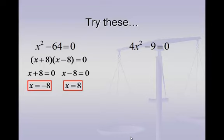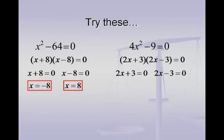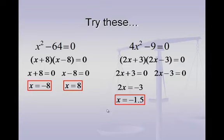The second problem on this slide still uses the perfect square method. 4x squared breaks apart into 2x and 2x. Negative 9 breaks apart into positive 3 and negative 3. So my factors are 2x plus 3 and 2x minus 3. Now we set them equal to zero and solve for x. On the first factor, I would begin by subtracting 3 to the right, and then divide by 2. Negative 3 divided by 2 is negative 1.5, or you can leave it as the fraction negative 3 over 2.